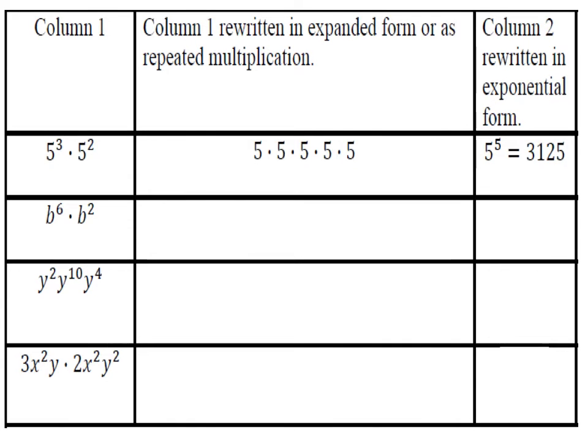So on this first problem, b to the power of 6, notice in the second column it wants this in expanded form, so that's what I'm going to do. So there I have 6 b's being multiplied by each other, which is what the exponent 6 told us there, and then I've got this b squared, which I'm going to put in purple, which is also being multiplied by that b to the power of 6.